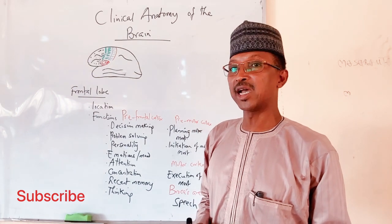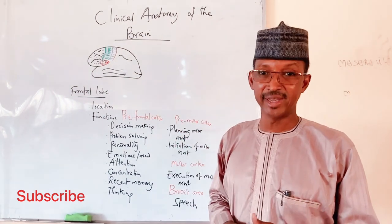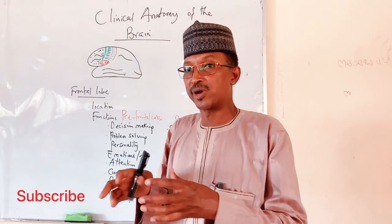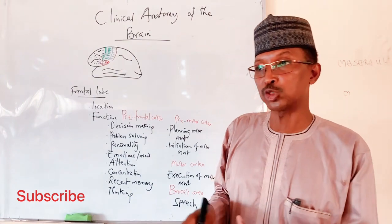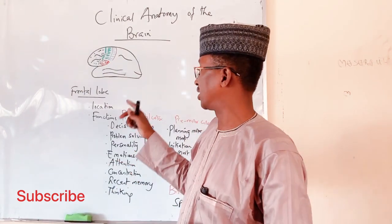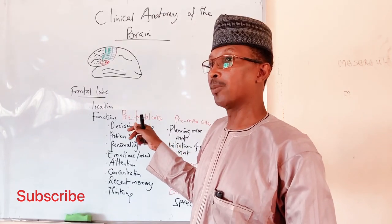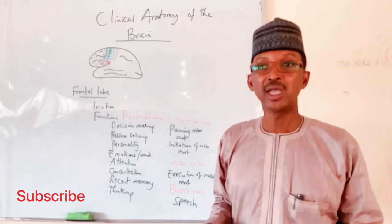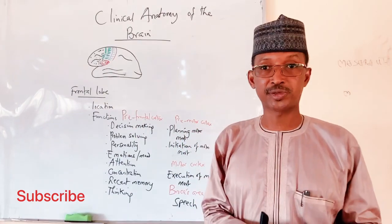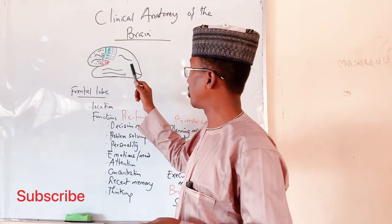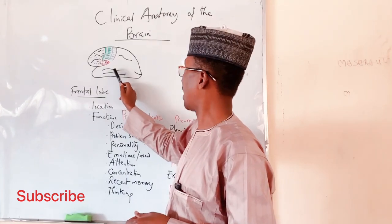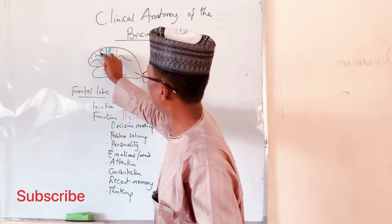The lecture is on clinical anatomy of the brain. The brain consists of two cerebral hemispheres, which form what we call the large brain, as opposed to the small brain — the cerebellum. Today's discussion focuses on the cerebral hemispheres, each made up of lobes. On the superior lateral surface you can see the frontal lobe, parietal lobe, temporal lobe, and occipital lobe.